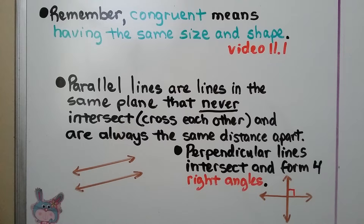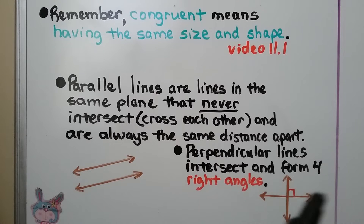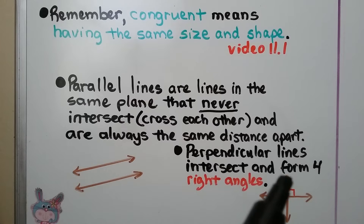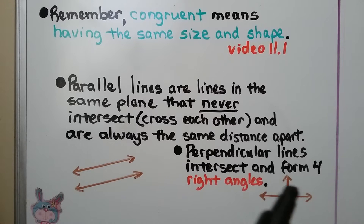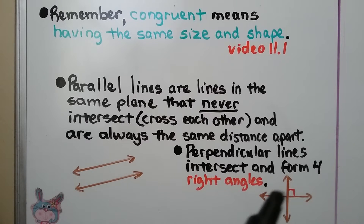Perpendicular lines do intersect — they cross and form four right angles at each inside corner.